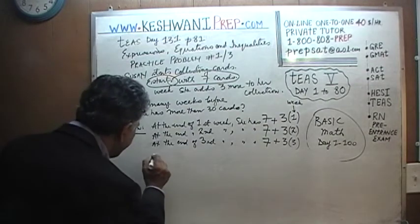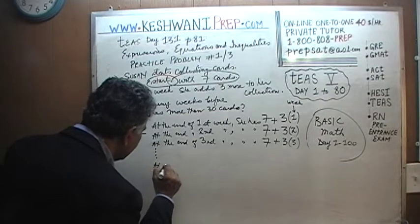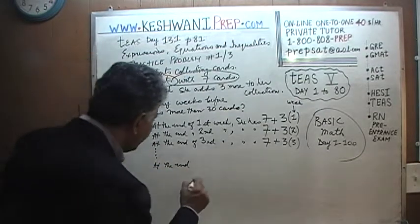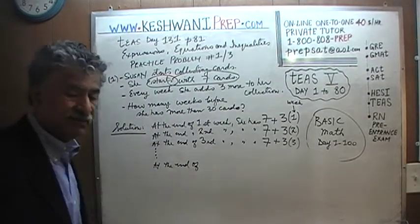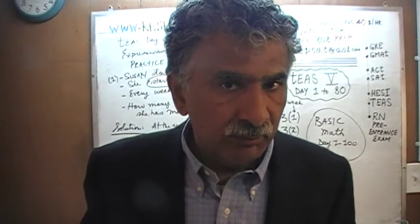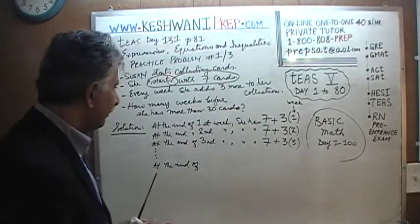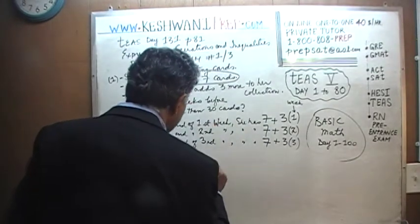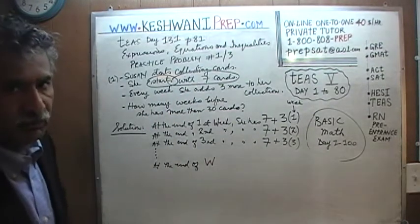This process continues. We don't know how many weeks she has to continue, so at the end of some unknown number of weeks — that's our unknown. Let's give it a name. Because it's the number of weeks we're dealing with, the logical thing is to call it W weeks. At the end of W weeks, W is our unknown. You could have called it X weeks, but everything in algebra does not need to be X.